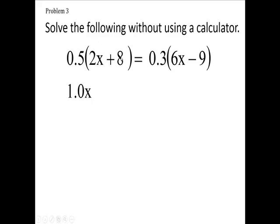So this is going to be 4.0, one decimal place. This equals, now 3 times 6 is 18, so 0.3 times 6x is 1.8x.